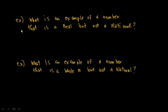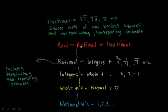Okay, so some examples here. So what is an example of a number that is a real, but not a rational? So if we think back here, a number that is a real, but not a rational. So that has to be part of this irrational set.